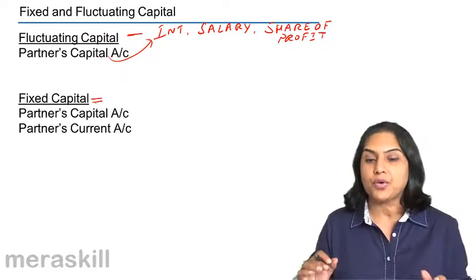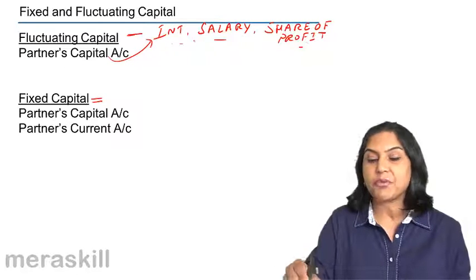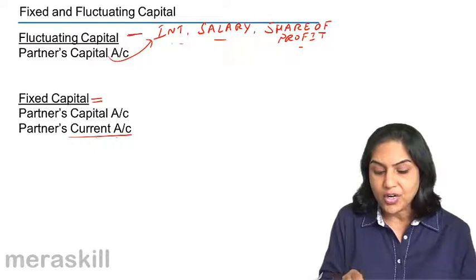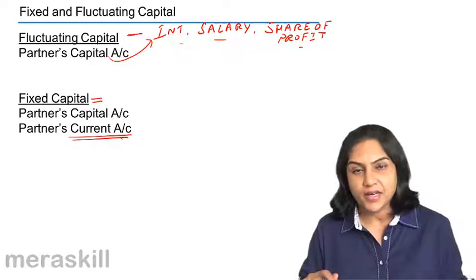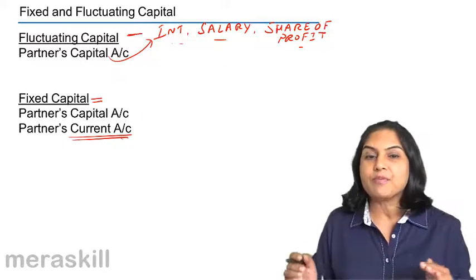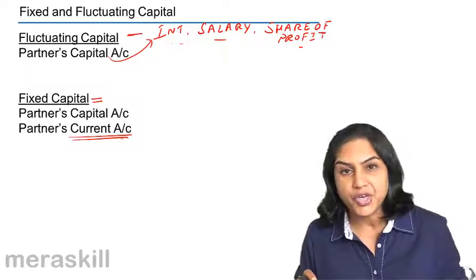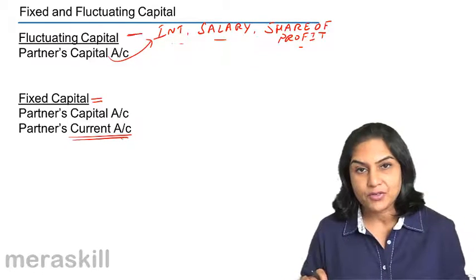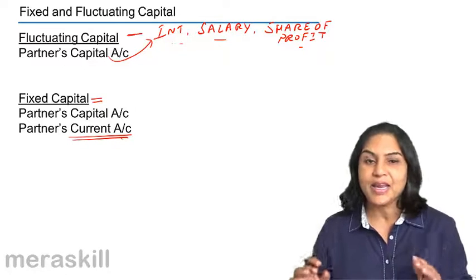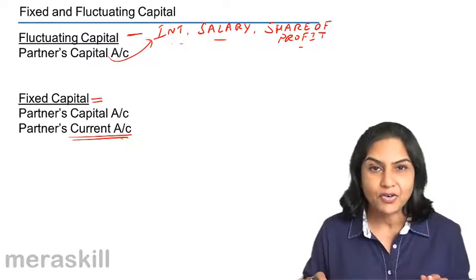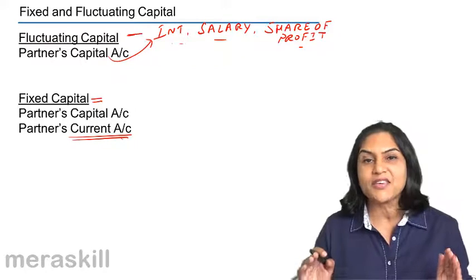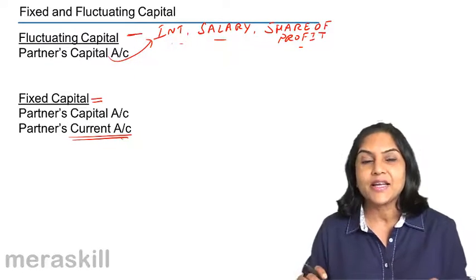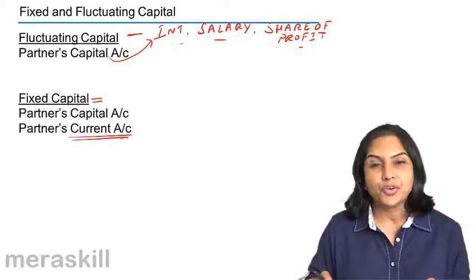So what would we do about adjustments like interest, salary, share of profit, etc.? These are routed through another account called the partner's current account. It becomes profit and loss appropriation account debit to partner's current accounts instead of partner's capital accounts. The current account in meaning is the same as the capital account, but the only difference is that the partners have agreed to keep their capital accounts fixed, so that it shows exactly the amount of capital contributed by them.